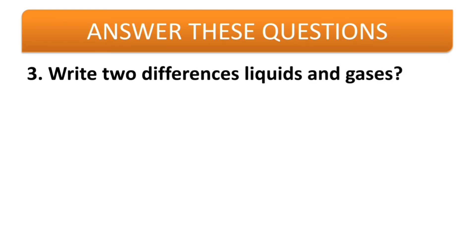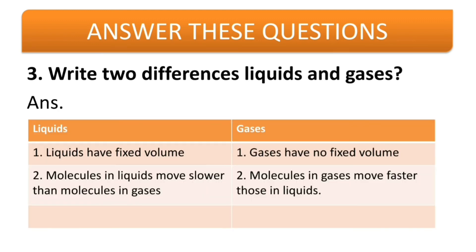Third question: write two differences between liquids and gases. In the liquids column: liquids have a fixed volume, and molecules in liquid move slower than molecules in gases. In the gases column: gases have no fixed volume, and molecules in gases move faster than those in liquids. These are very simple reasons you can use to differentiate between liquids and gases.